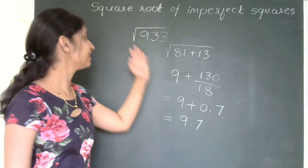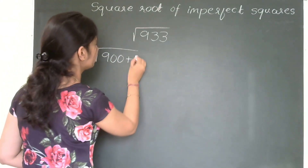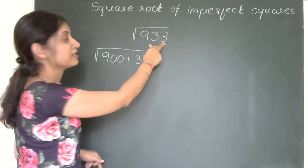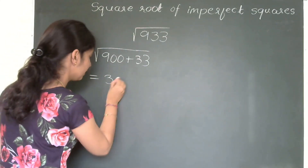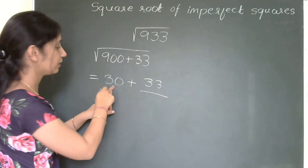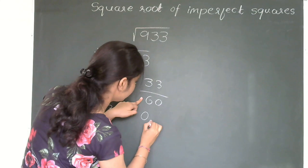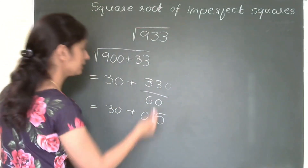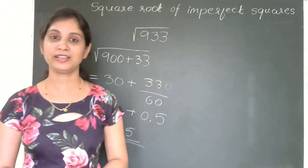For a three-digit number, I take 933. I rewrite it as 900 plus 33, since 30 squared is 900 and that is nearest to 933. √900 is 30. Then 30 plus 33 divided by (2×30) = 33 divided by 60. Taking the division: 0.55. So 30 plus 0.5 equals approximately 30.5. The square root of 933 is 30.5.